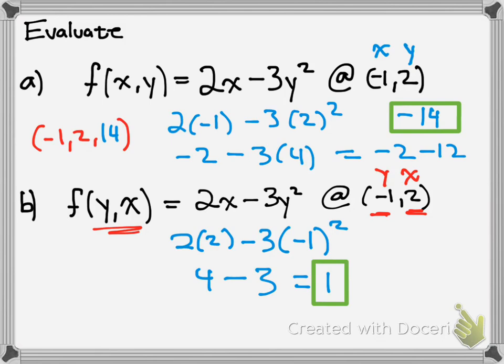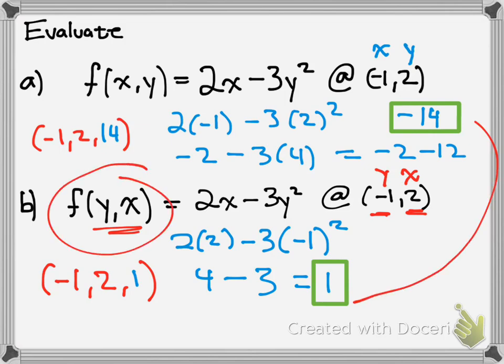So our point would be negative 1, 2, comma, and then 1. Notice how just by flipping the x and y, you get a totally different number — negative 14 and 1. So make sure you pay attention to what your function is with respect to.